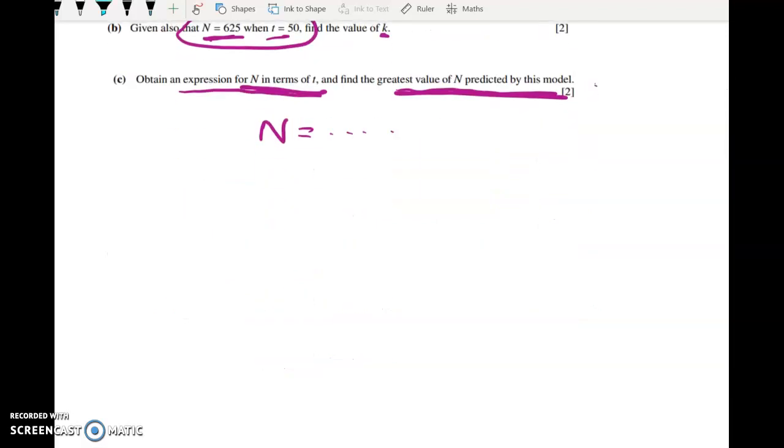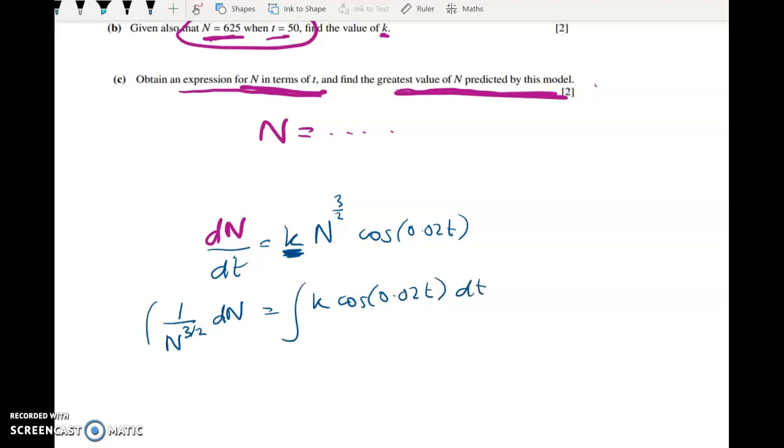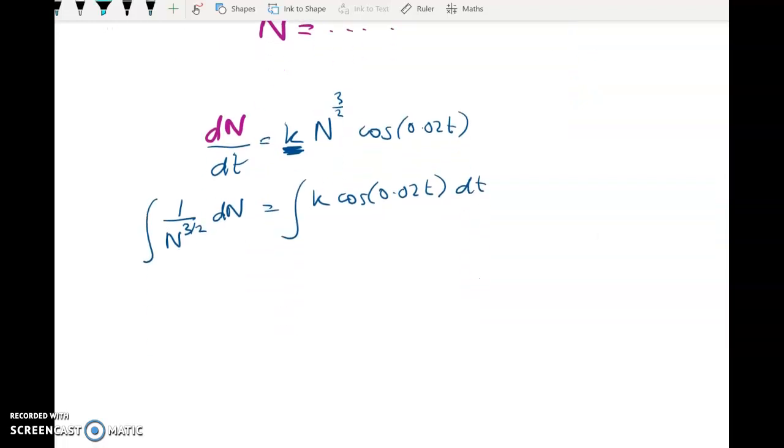So working through it, we start off with the usual pattern. DN by DT equals K times N to the power of 3 over 2 times cosine of 0.02T. I need to separate the variables, and I'm going to leave the K sitting up here. So 1 over N to the 3 over 2 DN equals K cos of 0.02T DT. We'll integrate both sides with respect to N and T.